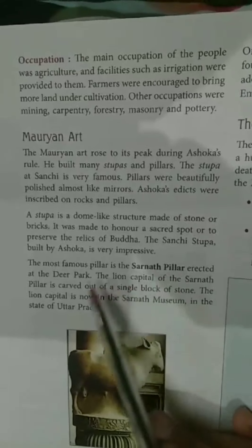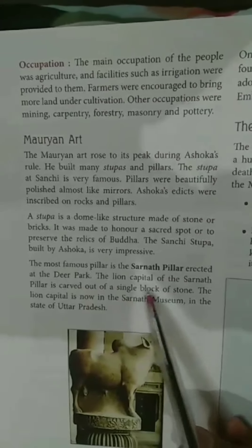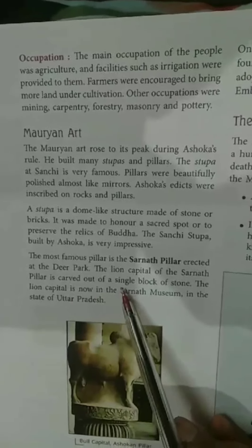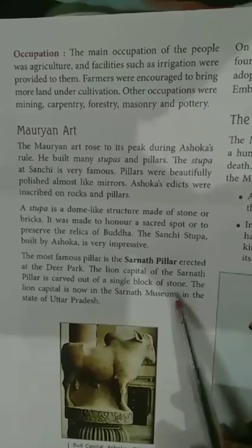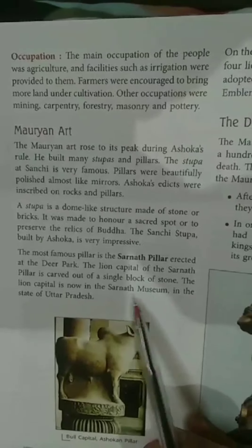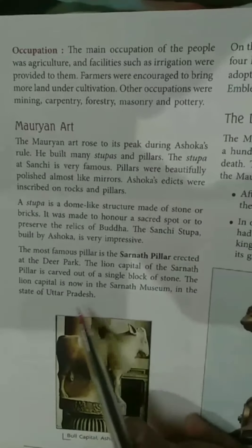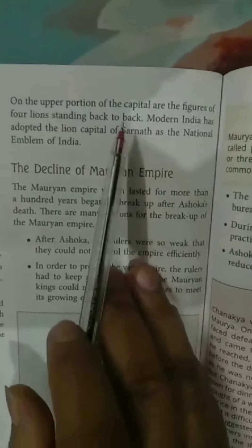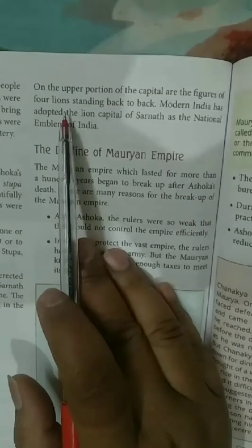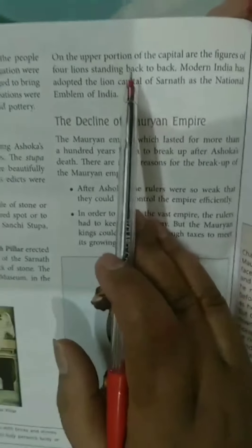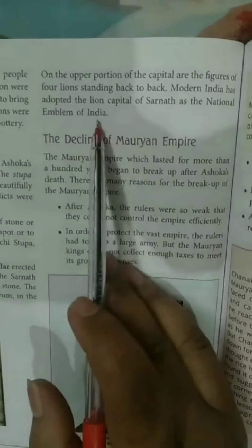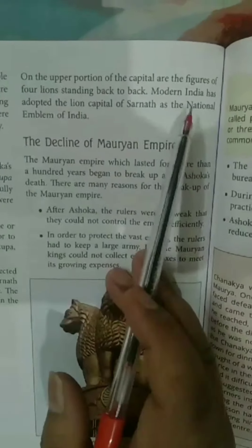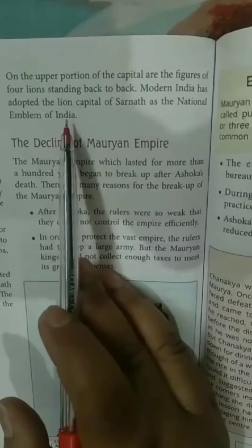The most popular pillar is the Sarnath pillar. The lion capital of the Sarnath pillar is made up of stone and is currently housed in the Sarnath Museum in the state of Uttar Pradesh. On the upper portion of the capital, we can see the figures of four lions standing back to back. Modern India has adopted the lion capital of Sarnath as the national emblem of India.